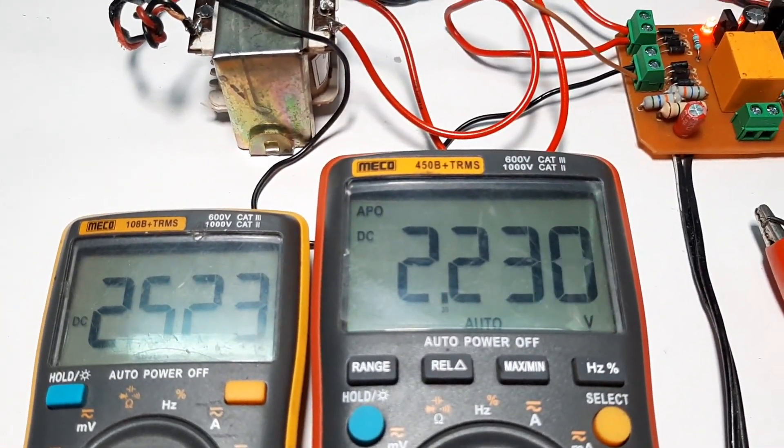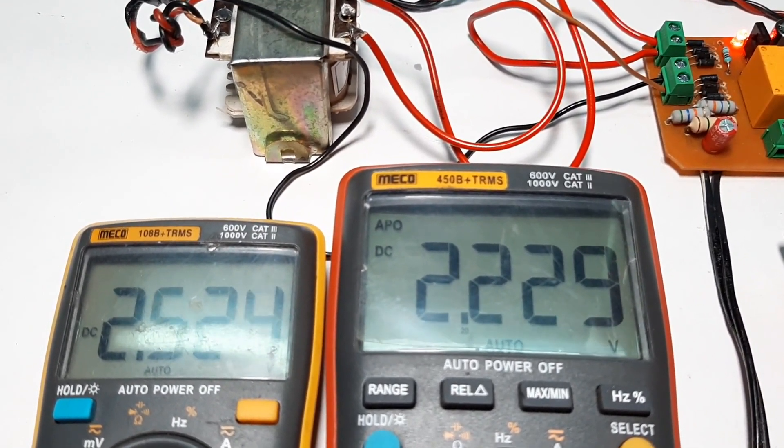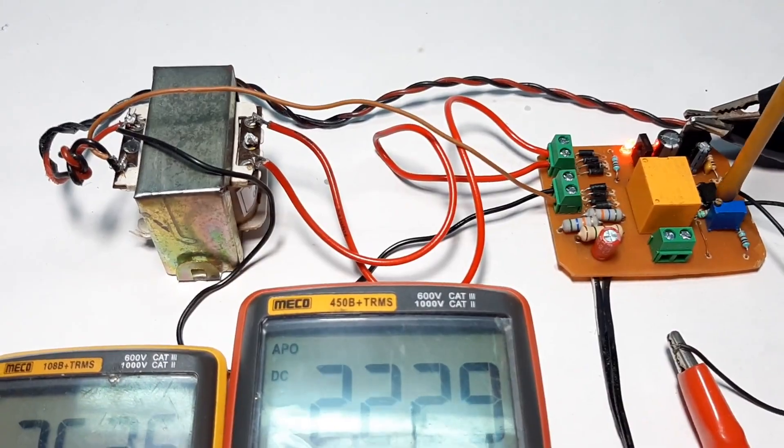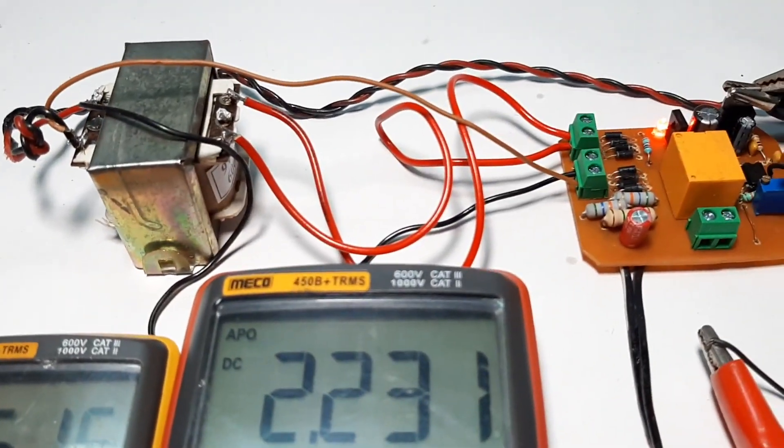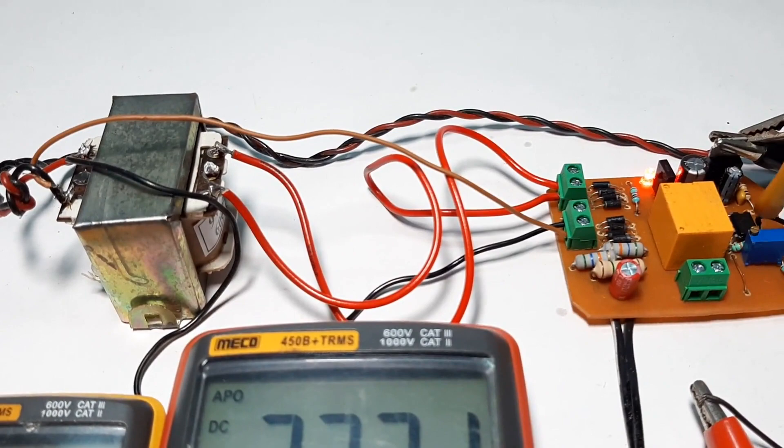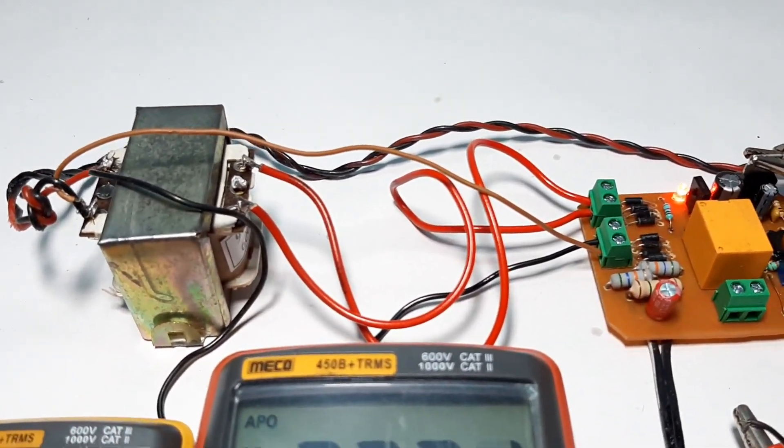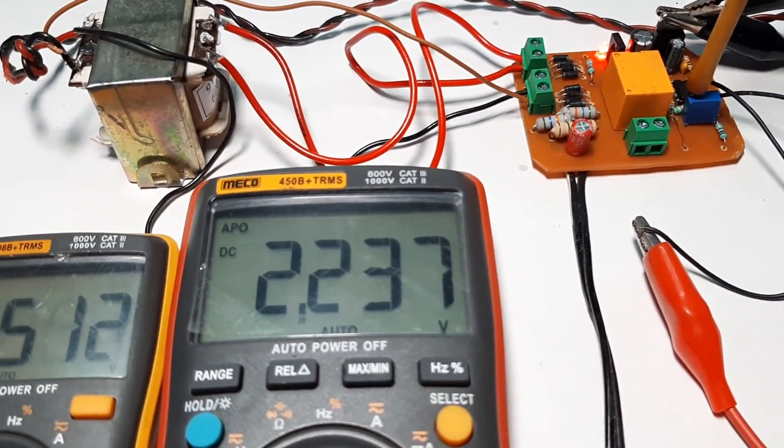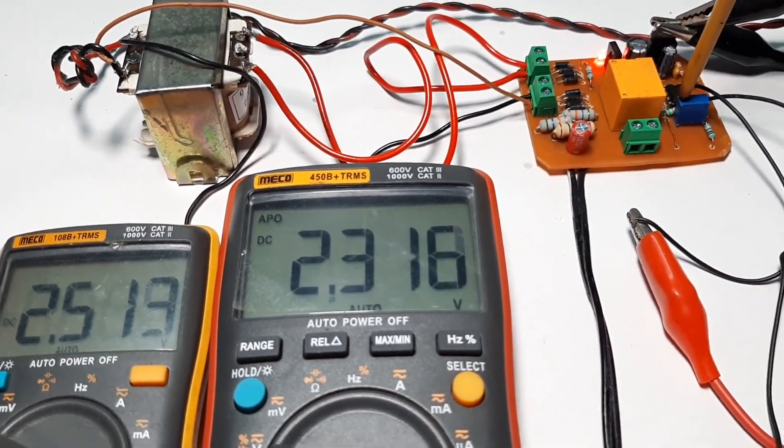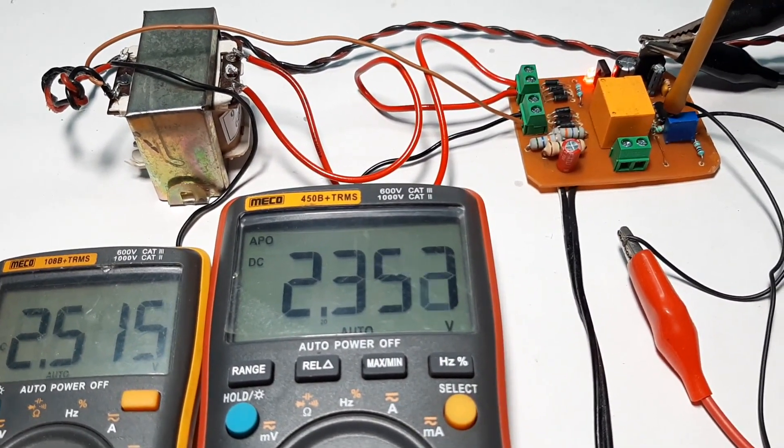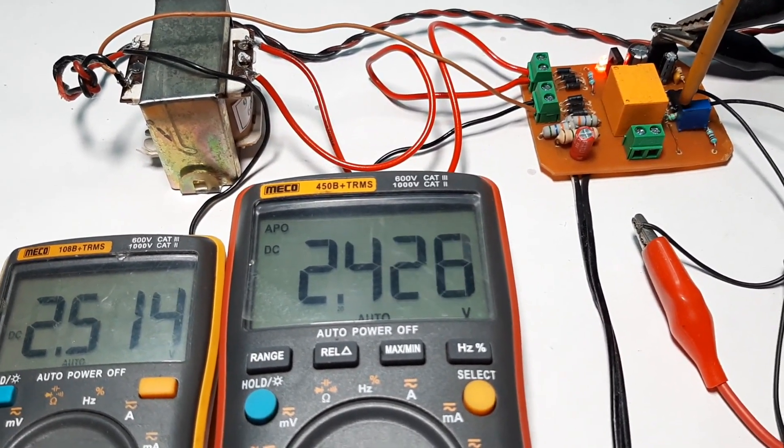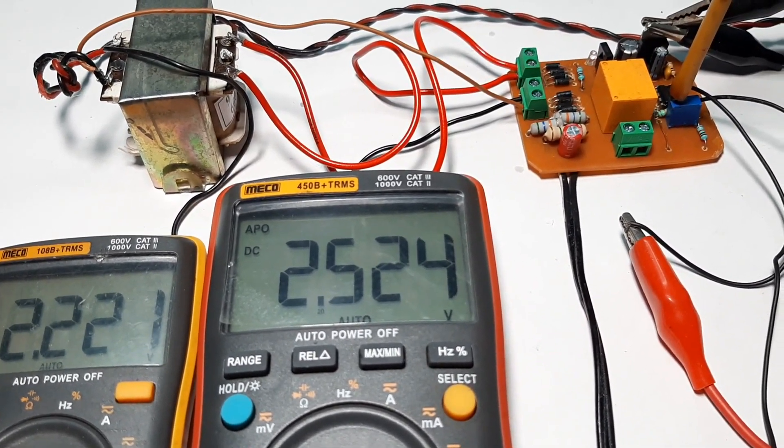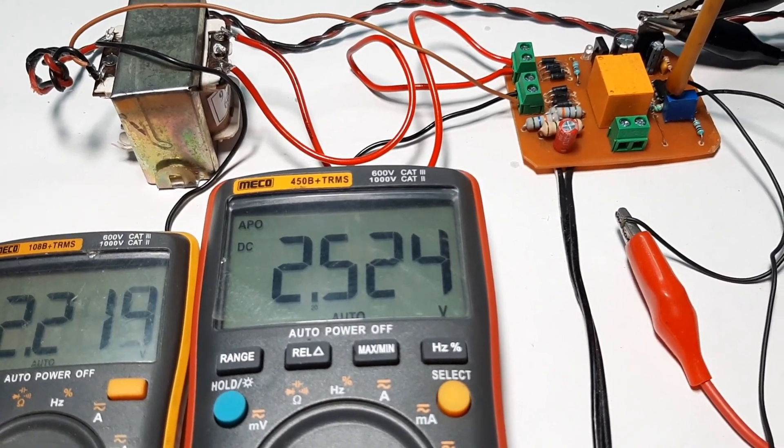And if I increase the reference voltage, you can see the op-amp will trigger and the LED will turn off, and again the relay will turn off. So as you can see, due to the hysteresis...